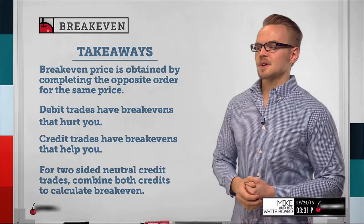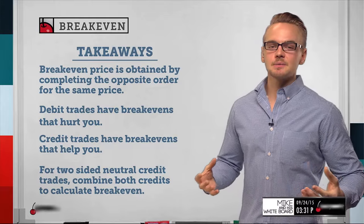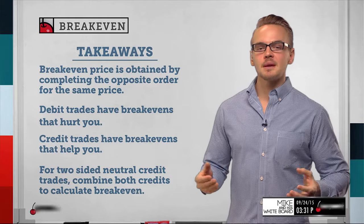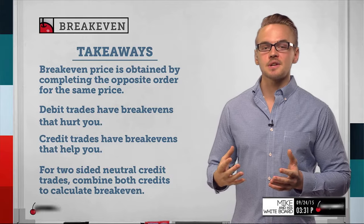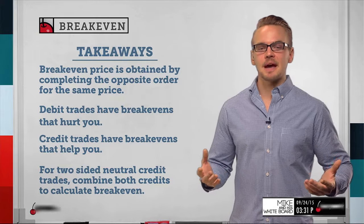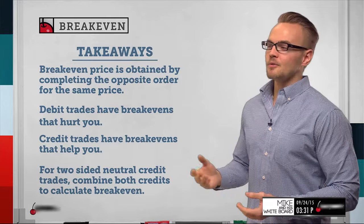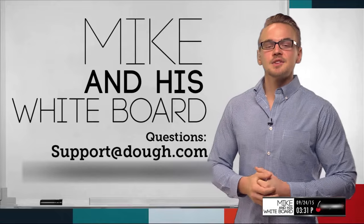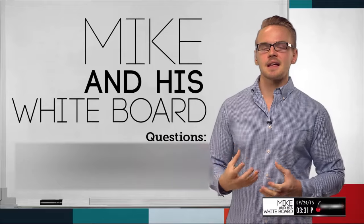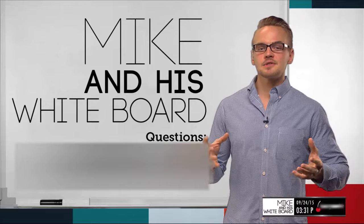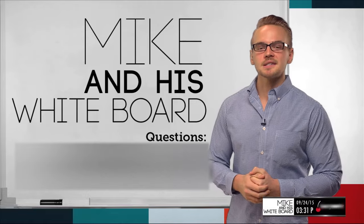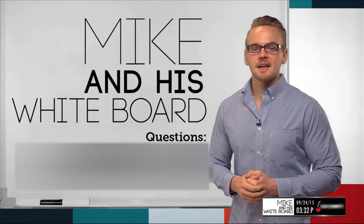For two-sided neutral trades, combine both credits to calculate your break-even. If I'm collecting $0.40 on one side and $0.60 on the other, one side must win and both sides offset each other at expiration. Hopefully the stock price stays within our strikes and we receive max credit and max profit. That wraps up break-evens. On Tuesday we'll get back into the Greeks and talk about vega — how volatility has its metric. Thank you so much for tuning in. Any feedback, shoot it over to support@dough.com or tweet us at @dough_trader_mike.